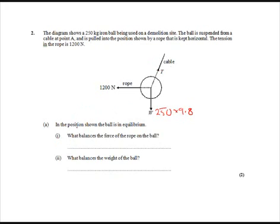Gravity, presumably we're on the earth. 1200 newtons to the left. This has been held in equilibrium by this tension. What balances the force of the rope on the ball? Well, the force of the rope on the ball is the only force to the left, so that must be balanced by the component of the tension which is going horizontally. Let's call that Th. So what balances the force of the rope? It's the horizontal component of the tension in the cable, if you like.